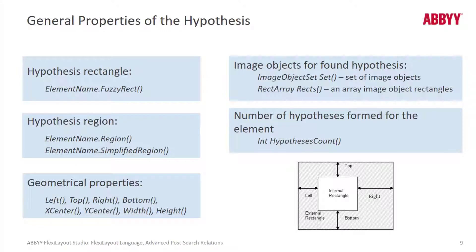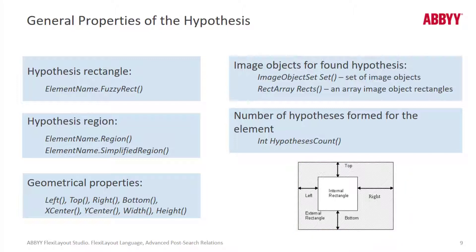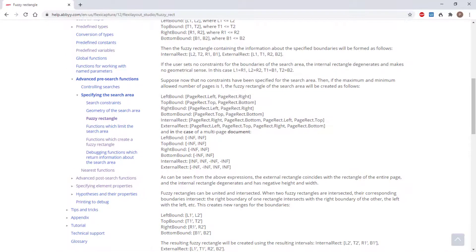We can work with different properties of a hypothesis, things like geometrical properties like the left, top, or bottom of the element, or the number of formed hypotheses, or even rectangle arrays, which we've already discussed. A fuzzy rectangle is a structure that describes a class of rectangles whose boundaries lie within a specific, allowed range. This is documented in Abbey Help as well, so we can read in more detail about this.